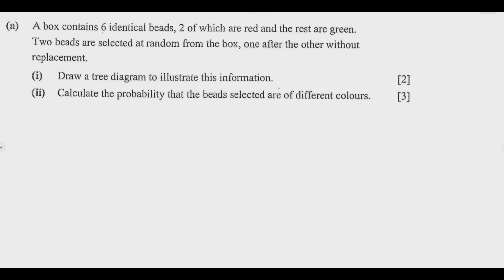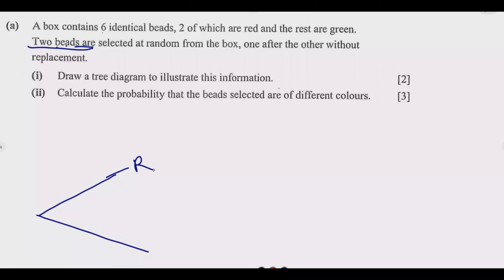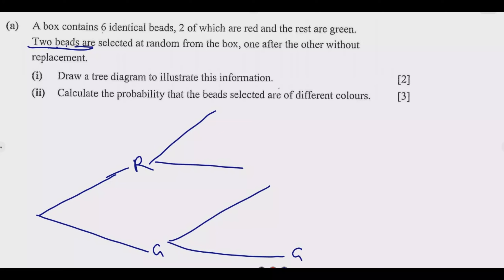For question one part (a), we are required to draw the tree diagram. Because we are choosing two beads, it's going to have two branches. The first branch has the option of choosing red or green, and then the second branch also splits into red and green for each outcome.